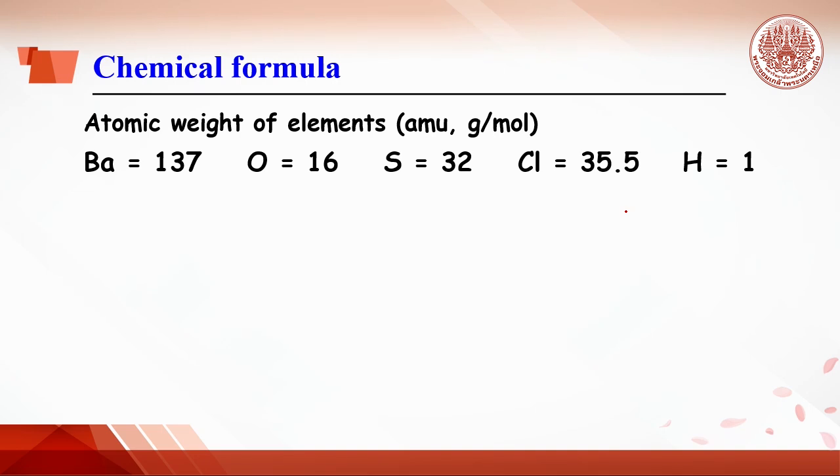From the periodic table, students understand atomic weight of the elements such as barium atom, which weighs 137 grams per mole. Oxygen is 16, sulfur 32, chlorine 35.5, and hydrogen is about 1 gram per mole.